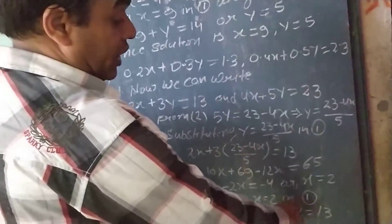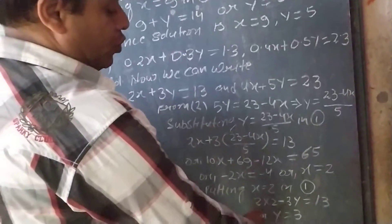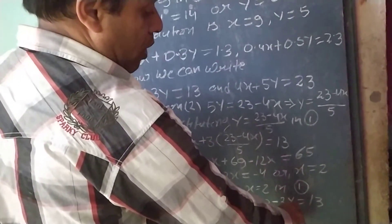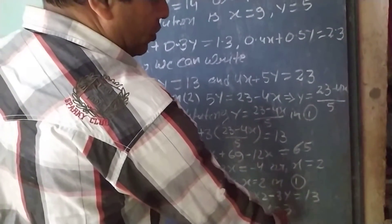Now, putting x equal to 2 in equation 1, that is, 2 into 2 plus 3y equal to 13, or we will get y equal to 3.